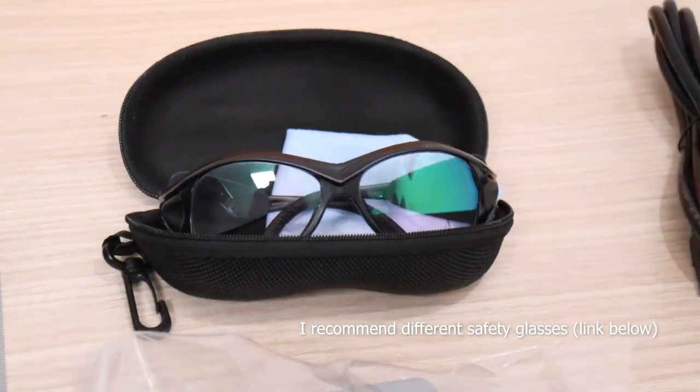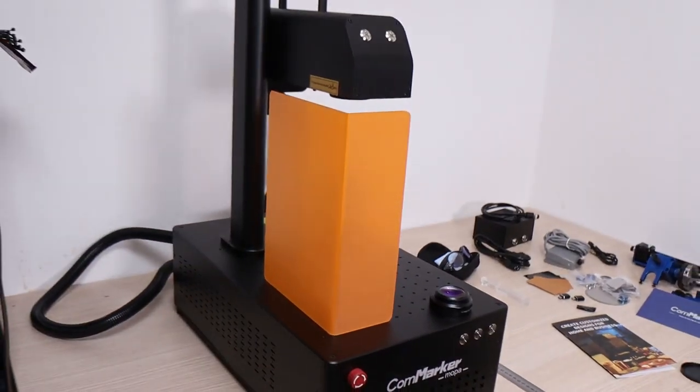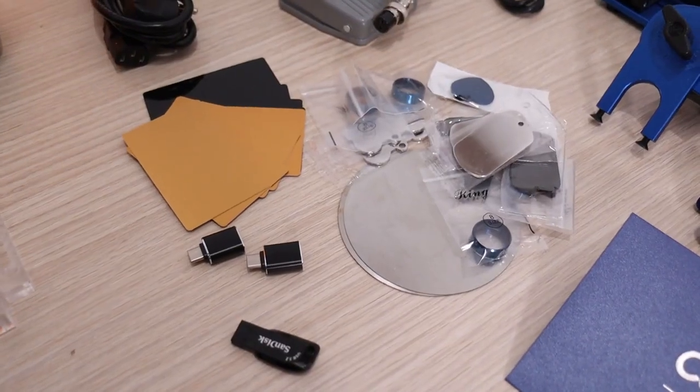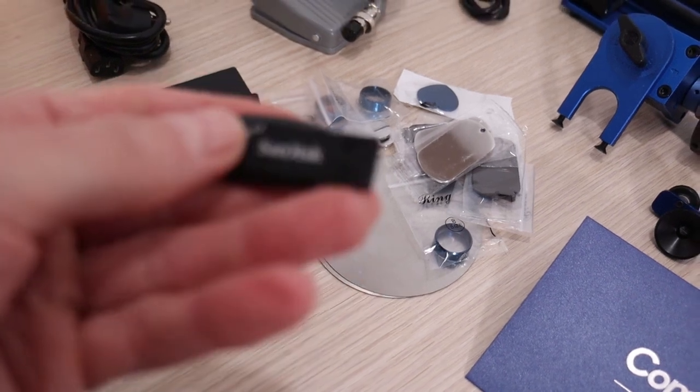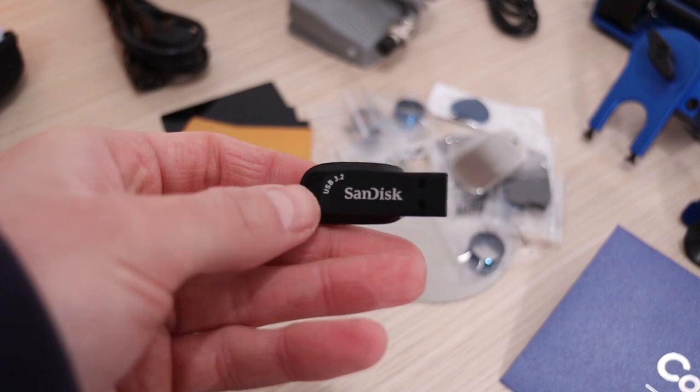It also comes with a set of standard accessories, a pair of safety glasses, a safety shield, and a bracket for hands-free operation. The machine supports EZ-CAD software, which comes included on the USB key, and most importantly, this machine also supports Lightburn, which is what I will be using.